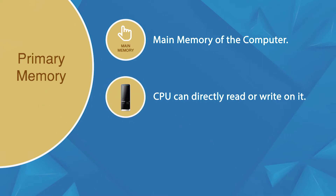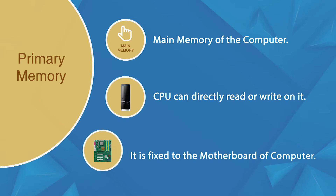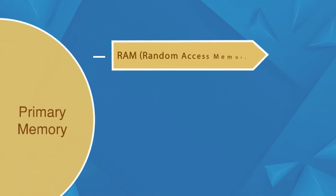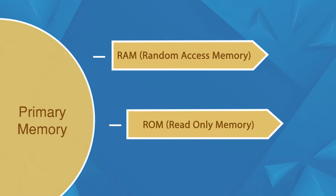Computer memory is divided into two types: primary memory and secondary memory. Primary memory is of two types: RAM — Random Access Memory — and ROM — Read Only Memory.